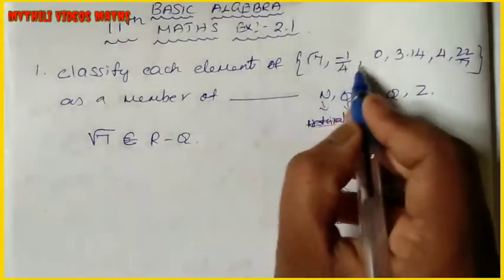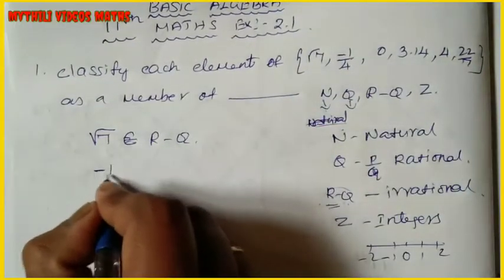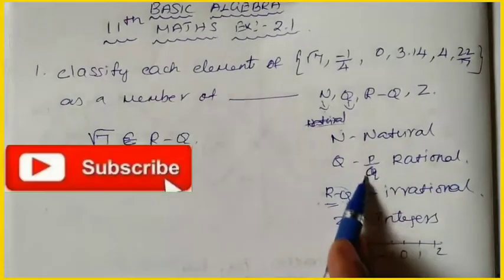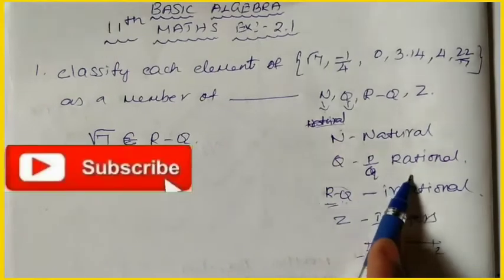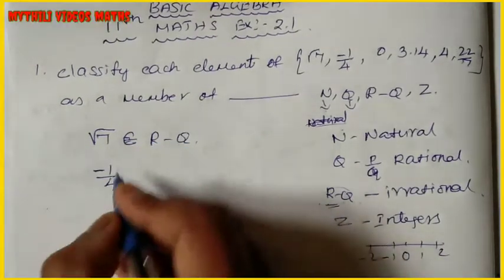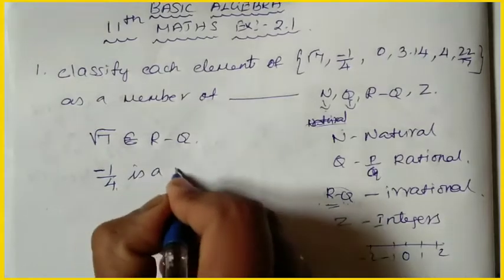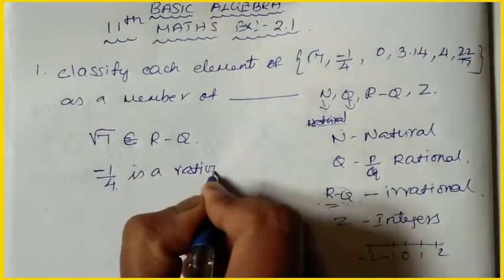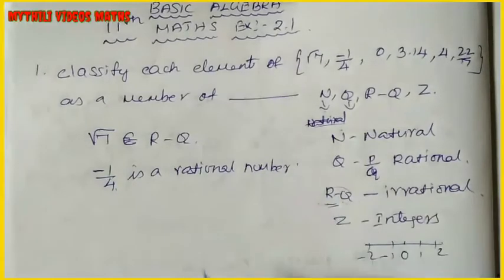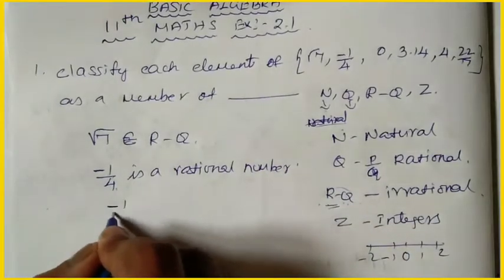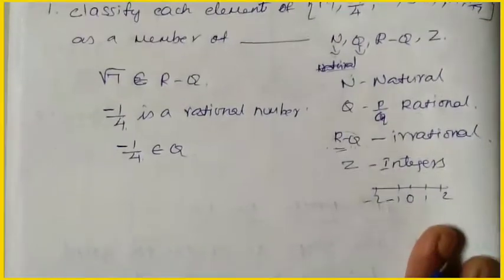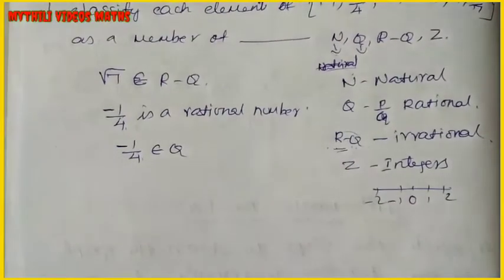The next one is -1/4. We already know the P by Q format is the rational number. This fraction -1/4 — how do you consider it? Rational number. So -1/4 belongs to Q, the rational number.